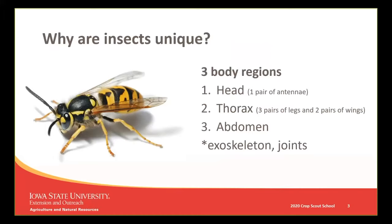The three body regions are: a head at the front with a pair of antennae; the middle section for locomotion, which has three pairs of legs and usually two pairs of wings; and the abdomen, reserved for reproduction, excretion, and digestion. There's a lot of variation given that there are over a million different species with more discovered every day.